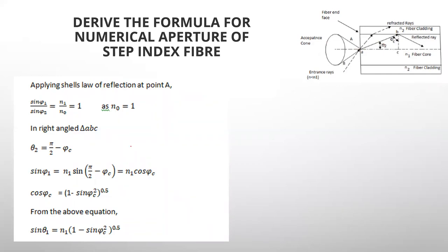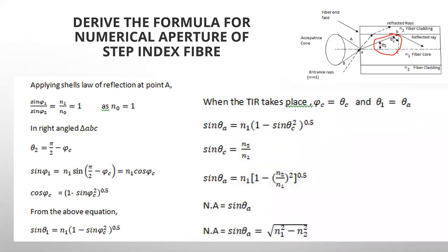From the right-angle triangle, θ₂ = π/2 − θc. So sin(θ₁) = n₁ × sin(π/2 − θc) = n₁ × cos(θc). When total internal reflection occurs, we have the critical angle θc. Simplifying, we get: numerical aperture = √(n₁² − n₂²). This formula is used to calculate the numerical aperture and the acceptance angle.